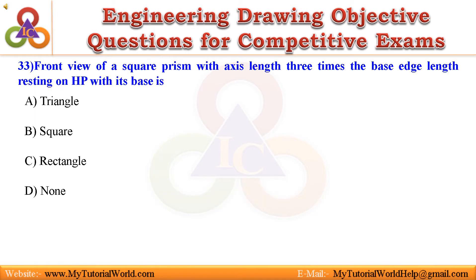Question 33. Front view of a square prism with axis length 3 times the base edge length resting on HP with its base is: A. Triangle.